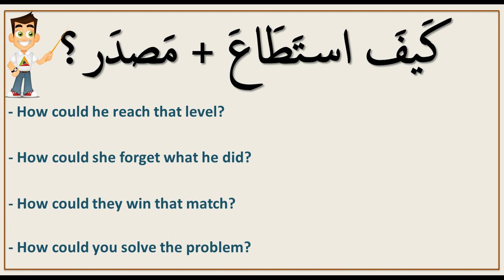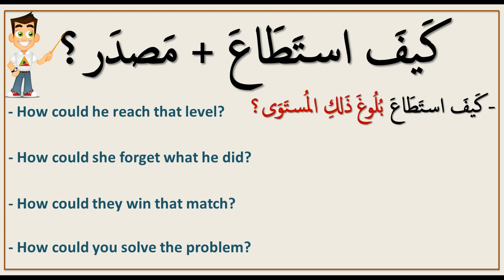The مصدر is the noun that comes from a verb. It won't always be the same in each question — it changes depending on the Arabic pronoun. For example, 'How could he reach that level?' We say كيف استطاع بلوغ ذلك المستوى. Here بلوغ is the مصدر — it's a noun from the verb بلغ يبلغ, meaning 'to reach'.